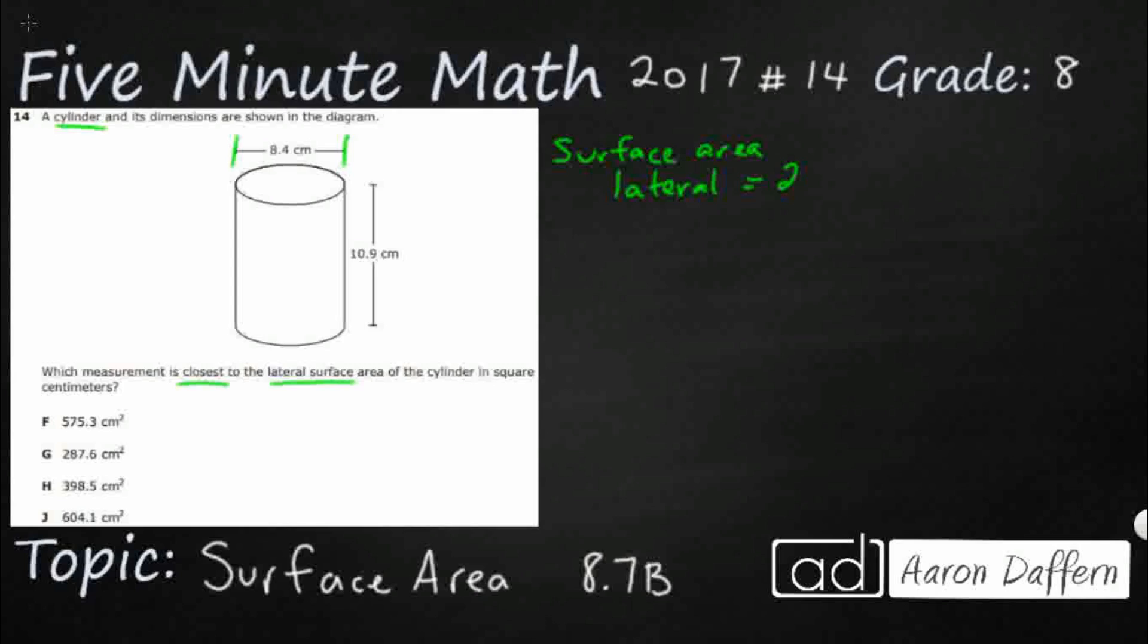And what you're going to get is you're going to get 2πrh. So what does that mean? Well, what we want to do is we're looking for the surface area of this curved shape right here. Just this curved shape. That's the lateral surface area, because it's connecting the two bases.